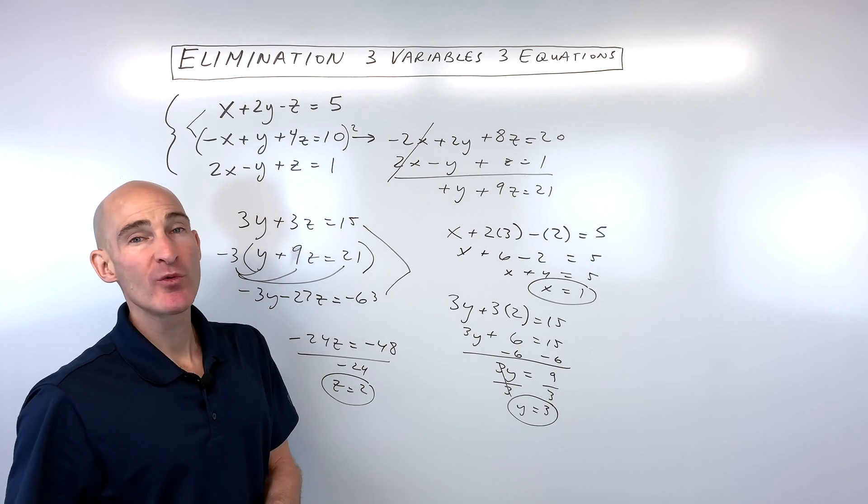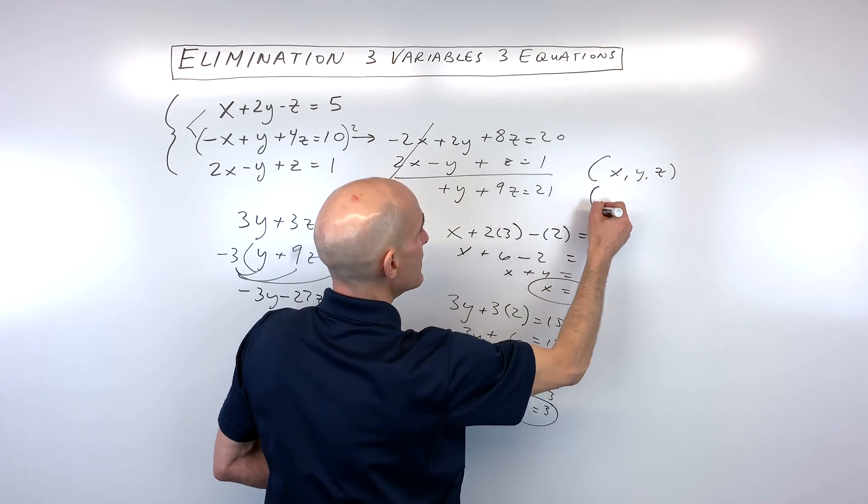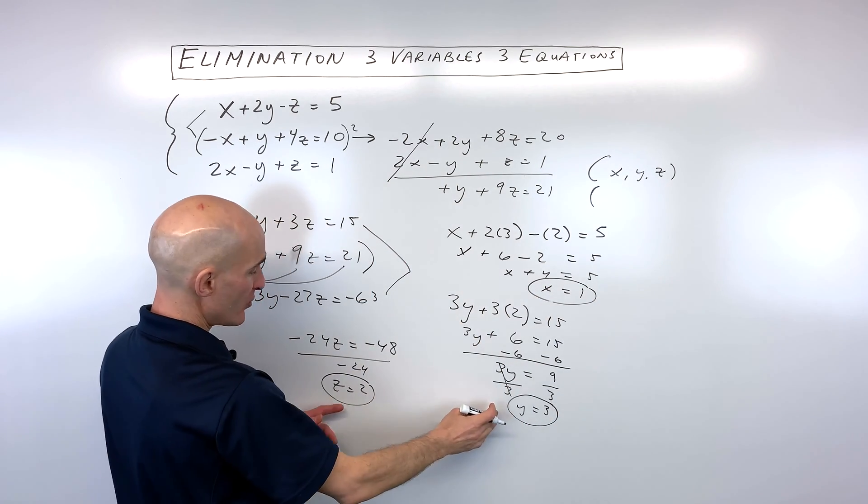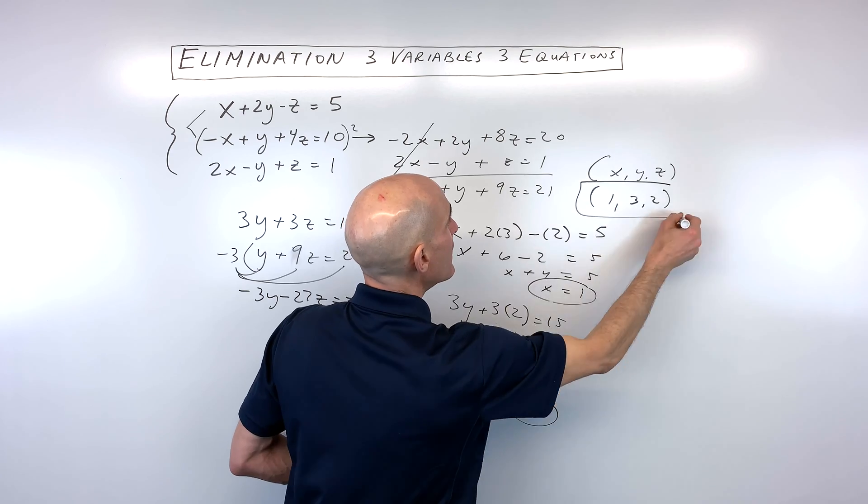So our final solution we want to write as a triple. And it looks like this. It's x, y, z, but in this case it's going to be 1, 3, and 2. So it's just alphabetical order. And that's your solution.